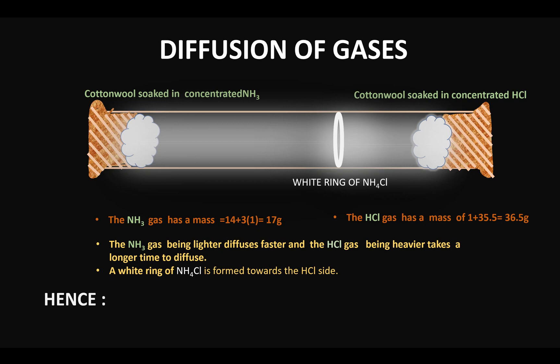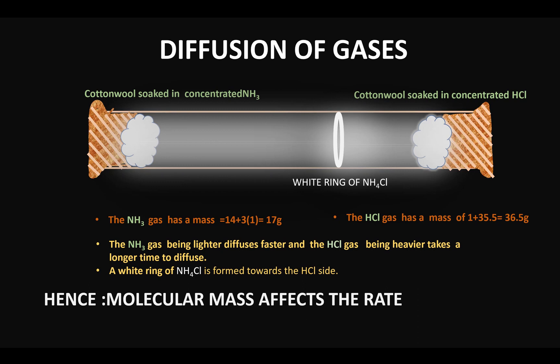We can make a general conclusion that molecular mass affects the rate of diffusion: the greater the molecular mass, the slower is the rate of diffusion, and vice versa. This is all for today's video on diffusion of gases. If you liked watching my video, please do subscribe to my channel. Thank you.